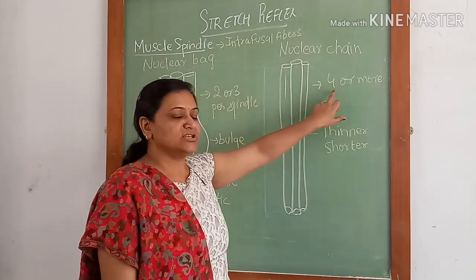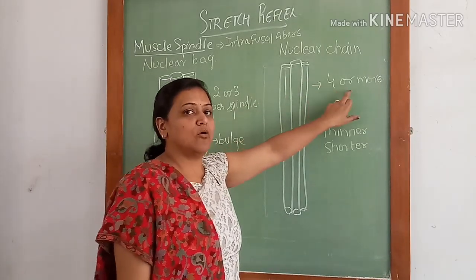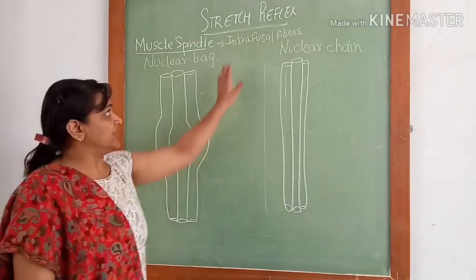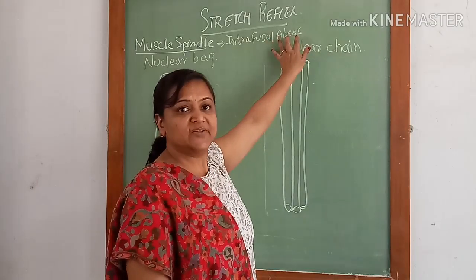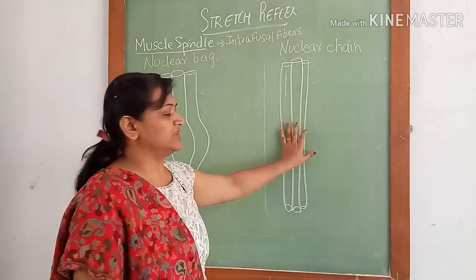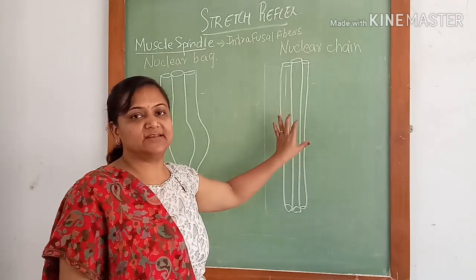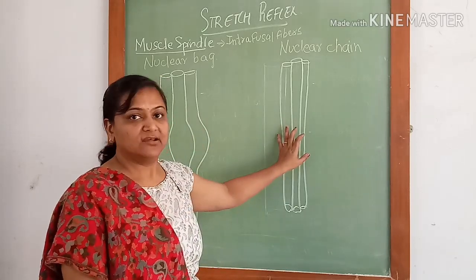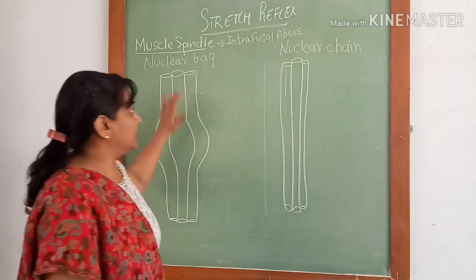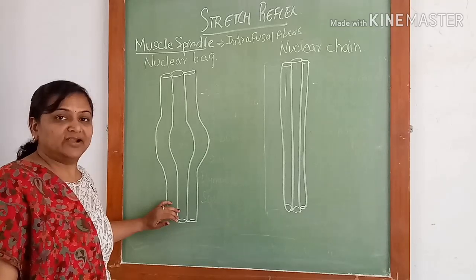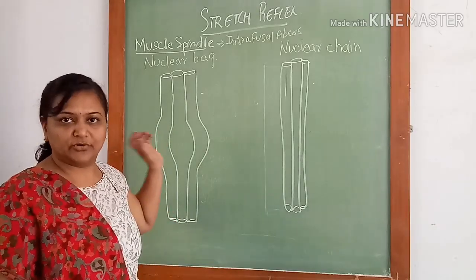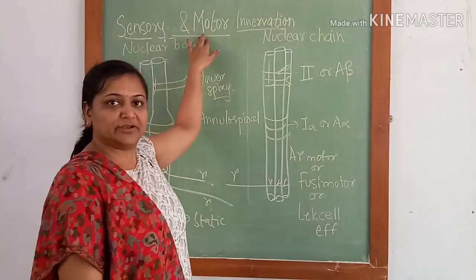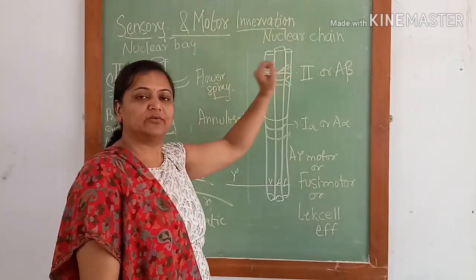Nuclear bag fibers are two or three per spindle, whereas nuclear chain fibers are four or more per spindle. In the intrafusal fibers, the central part is sensitive to stretch and does not contain contractile proteins, whereas the peripheral part of the intrafusal fibers contains contractile proteins.